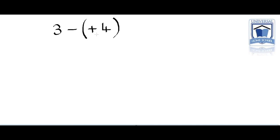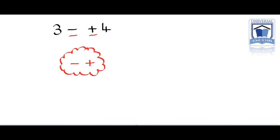First of all we're going to look at the positive and the negative. We have to decide what do these two symbols change into. Well the negative and the positive become a negative. So both the negative and the positive become a negative. I can also get rid of the parenthesis because in an equation like this they really don't make a difference to the question. So the negative and the positive here are going to become a negative, changing the question to 3 take away 4.